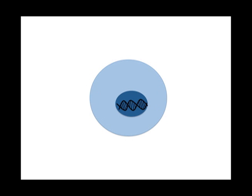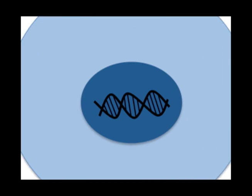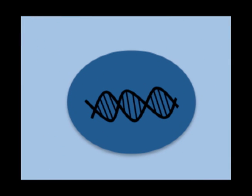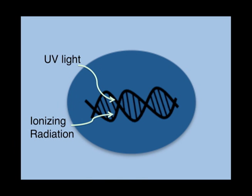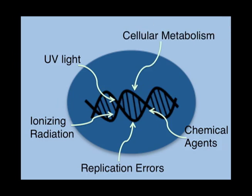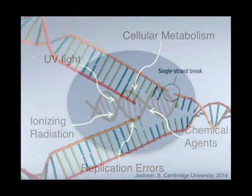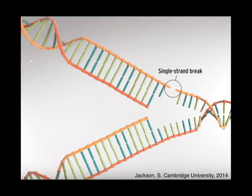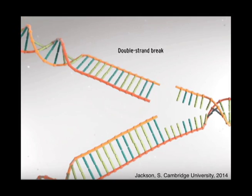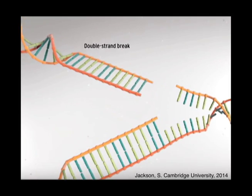As the primary carrier of genetic information, DNA and the maintenance of its integrity is of the utmost importance to cell survival. Yet in each cell cycle, DNA is damaged thousands of times by mutagenizing agents like UV light, ionizing radiation, replication errors, chemical agents, and cellular metabolism. This introduces flaws, such as single and double-stranded breaks, into the DNA structure, which must be repaired for cell survival.